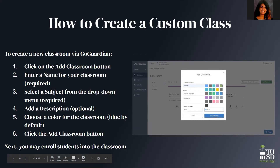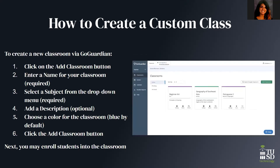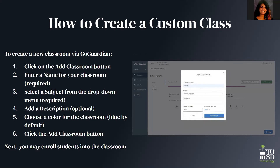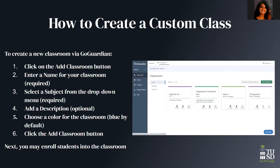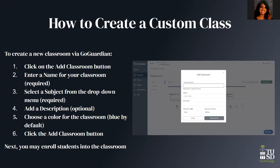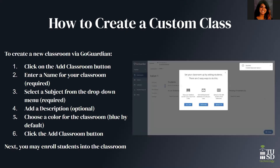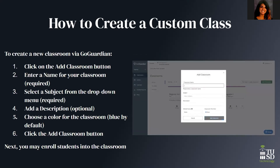Creating a custom class has just six steps. You click the add classroom button on the home page, enter the name for your classroom — this can be anything you want, but don't put the student's full name, use first name and last initial. Then select a subject from the drop-down menu, add an optional description, choose a color for organization, and add the classroom. After that, all you have to do is add your students.